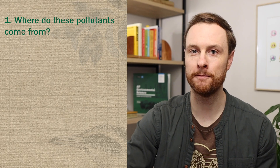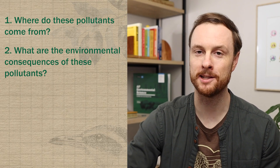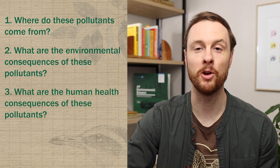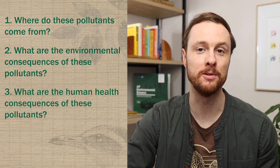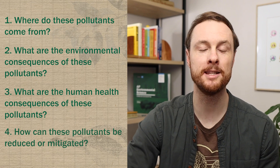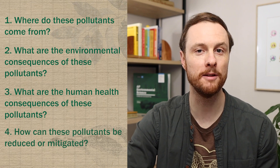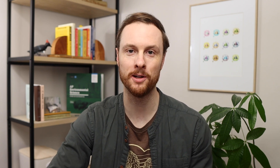First, where do these air pollutants come from? Second, what are the environmental consequences of these air pollutants? Third, what are the human health consequences of these air pollutants? And finally, are there any mitigation strategies or ways that we can reduce the effects of these air pollutants? So let's go through an example of how you could use this Unit 7 frame review template to review Topic 7.2, which is photochemical smog.